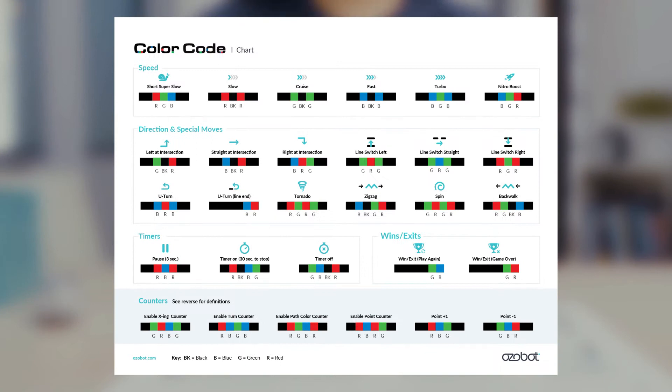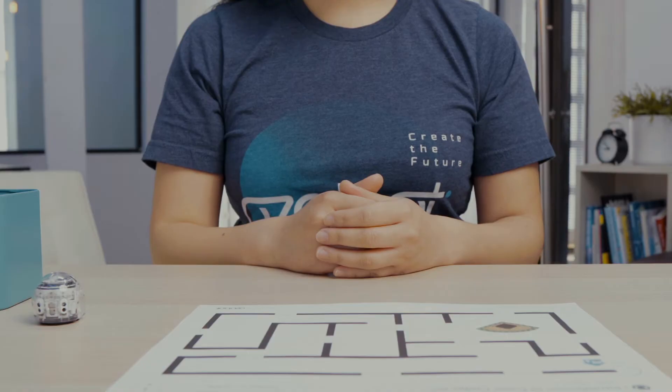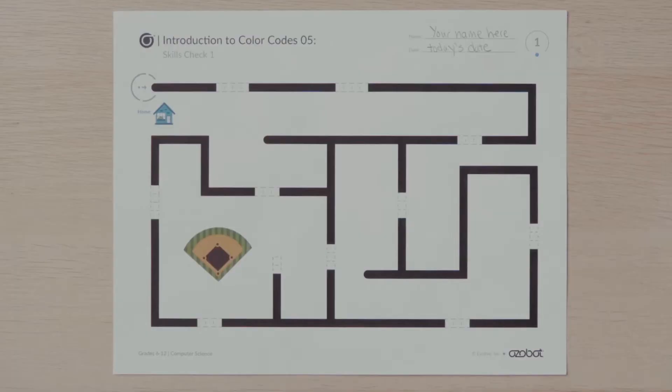Be sure you have the color codes chart available for reference, either a printed copy or online. Take a look at the maze. Notice the first two color codes have four color blocks. That means you'll start out from your house with some special moves. Also notice how much space there is after each color code.